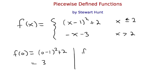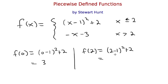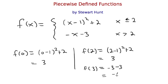If I wanted to evaluate f of 2, I would use the first piece again because 2 is less than or equal to 2. Two is not greater than 2, so I don't use the second piece. And I get 2 minus 1 squared plus 2, which is 3 again. Now if I wanted to evaluate f of 3, well 3 is greater than 2, so I use the second piece: minus 3 minus 3, which is negative 6.